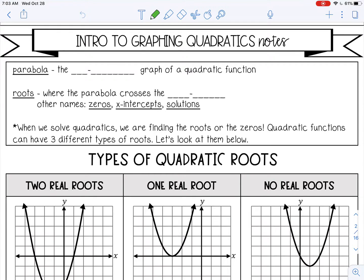Welcome to this lesson on an intro to graphing quadratics. Let's go over a few vocabulary words. A parabola is the u-shaped graph of a quadratic function, and you see some of those below. It has this u shape.